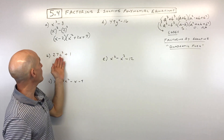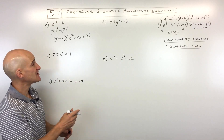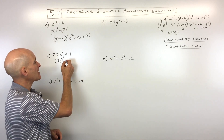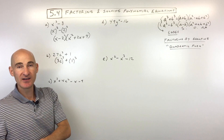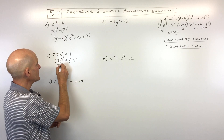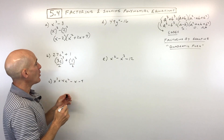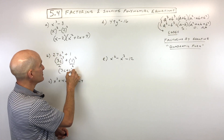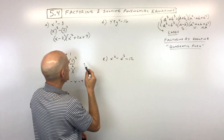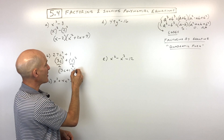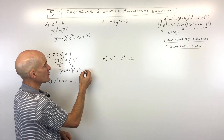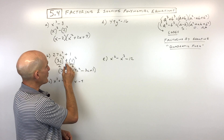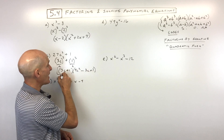For example b, 27c cubed plus 1: 27c cubed is really 3c cubed, since 3c times 3c times 3c equals 27c cubed. And 1 is often overlooked as a perfect cube — one times one times one is one. So our a value is 3c and b value is 1. Substituting into the sum of two cubes formula gives us 3c plus 1, times 9c squared minus 3c plus 1. Using SOAP: same sign adding, opposite subtracting, always positive for the last term.